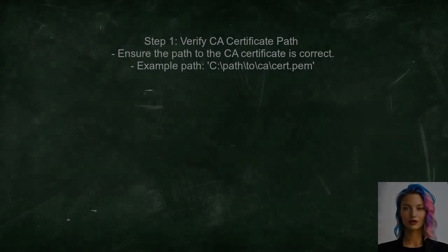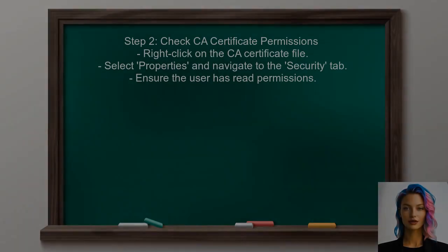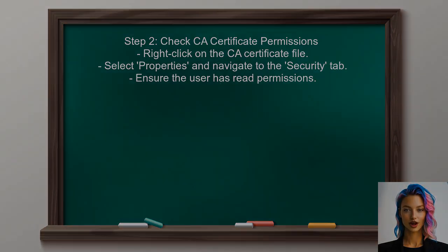To begin troubleshooting the SSL connection error, the user should first ensure that the CA certificate path is correct — this is crucial for establishing a secure connection. Next, the user should check the permissions of the CA certificate file. On Windows, the file permissions can sometimes prevent access, leading to connection issues.